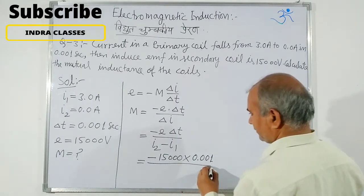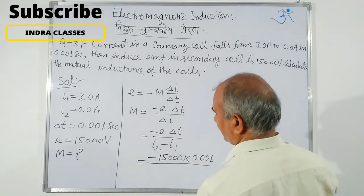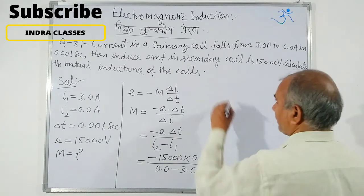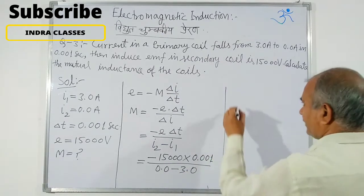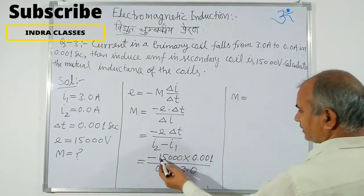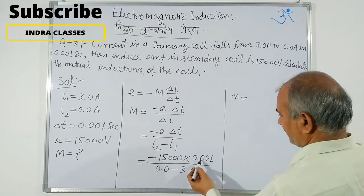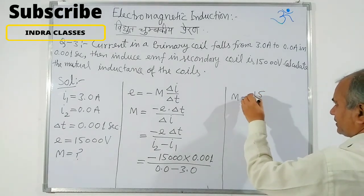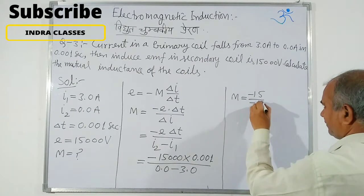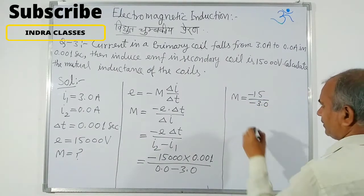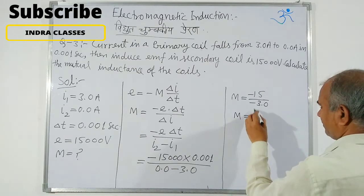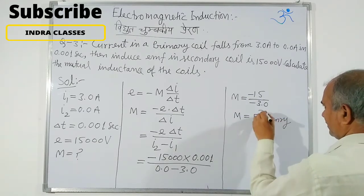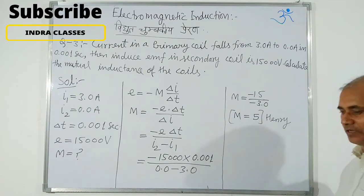Substituting: ΔT = 0.001 s, I2 = 3.0, I1 = 0 (as given). Solving: 15 divided by 3.0 = 5. So M = 5 Henry.